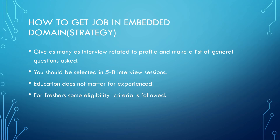Now let me talk about the strategy to get a job in the embedded domain. This strategy is primarily for experienced persons, but freshers can also use it. You need to give as many interviews as possible related to your profile and make a list of general questions asked by interviewers. After doing this across five to eight interview sessions, you should be able to get selected easily — though it depends from person to person. Regarding eligibility criteria for Actalent Technologies, there is no eligibility criteria for experienced persons.